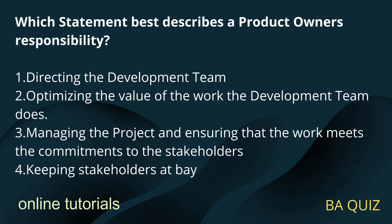Question number 5: Which statement best describes a product owner's responsibility? Option 1: Directing the development team. Option 2: Optimizing the value of the work the development team does. Option 3: Managing the project and ensuring that the work meets the commitments to the stakeholders. Option 4: Keeping stakeholders at bay.